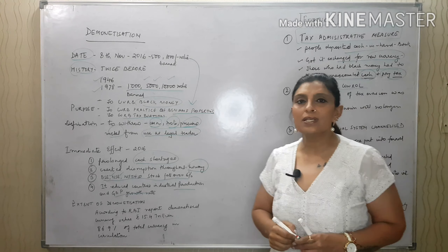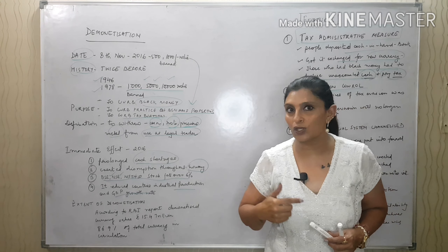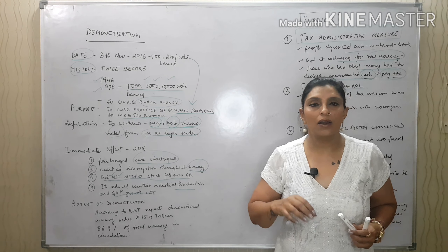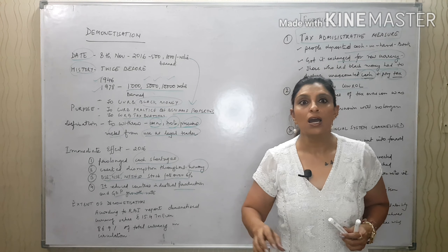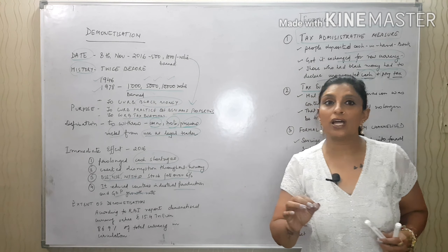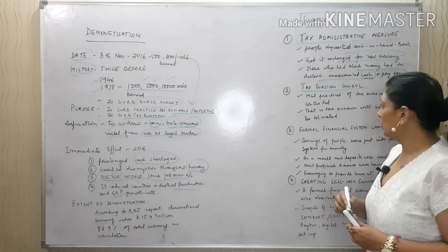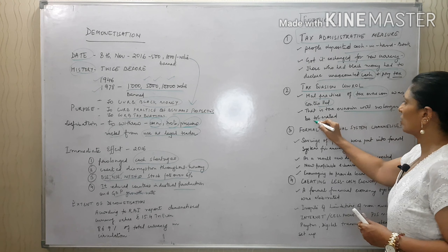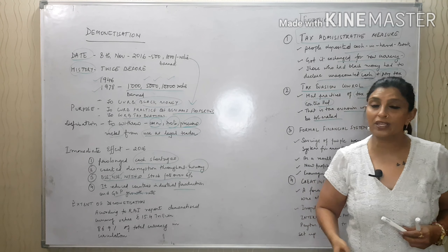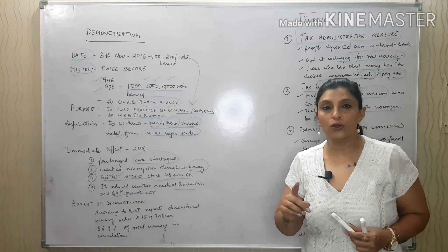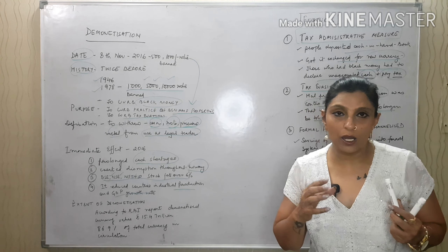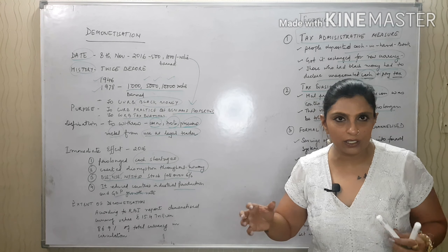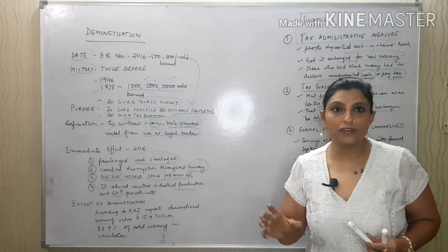The second feature was tax evasion control. People were trying to evade taxes — not paying on time or not paying at all. When everything became transparent, people had to deposit and declare. The problem of tax evasion was eroded. People had to link their accounts with Aadhaar cards, and you could not maintain multiple unlinked bank accounts.